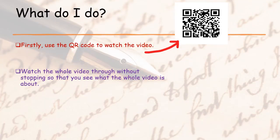So what do I do? What do you need to do? Firstly you have to use the QR code to watch the video. Now my suggestion is that you watch the whole video through without stopping so that you can see what the whole video is about because we need to watch the video more than once. So the first time watch the whole thing through.